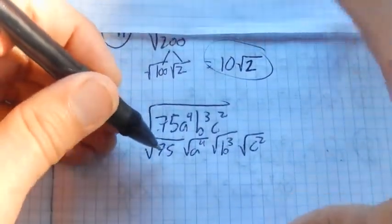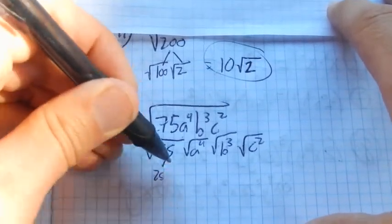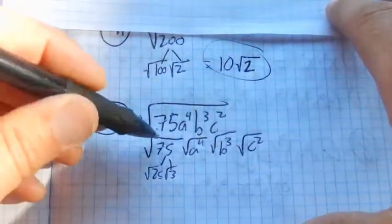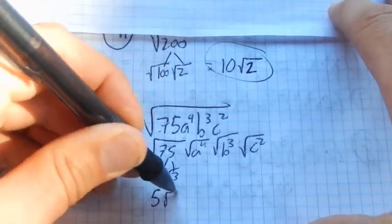Now I'm going to break these up to look for squares. 75, I see a 25 in there. 25 times 3. Still square rooted. So this is going to leave me with a 5 root 3.